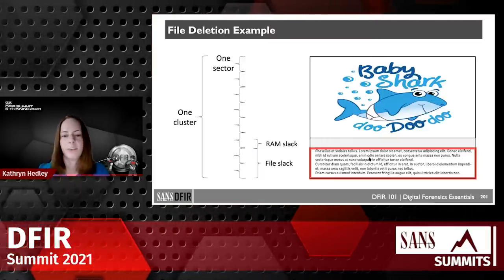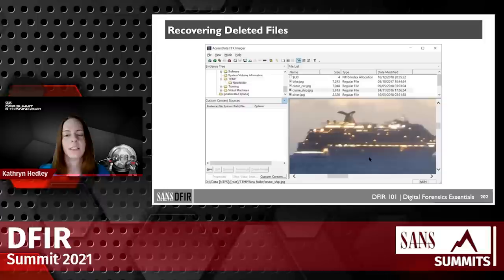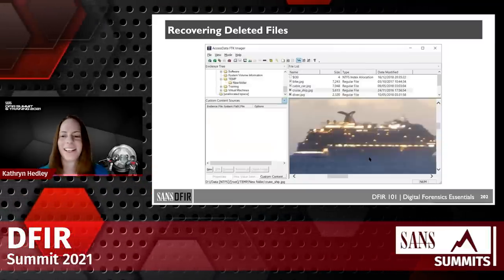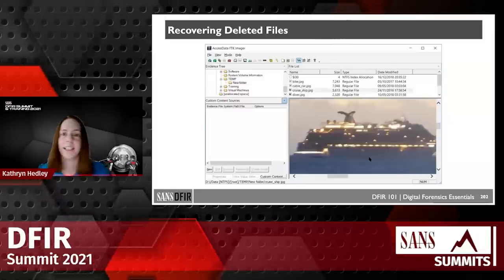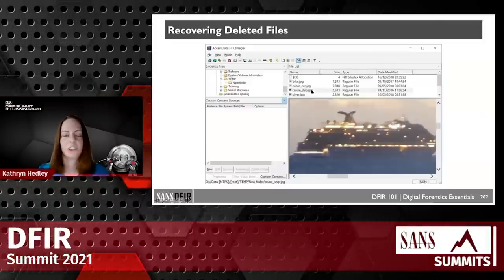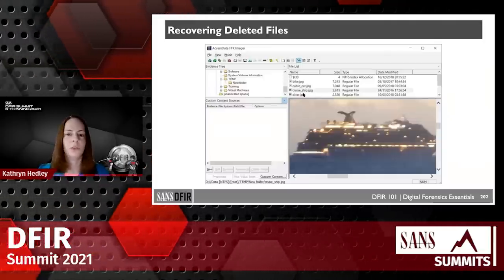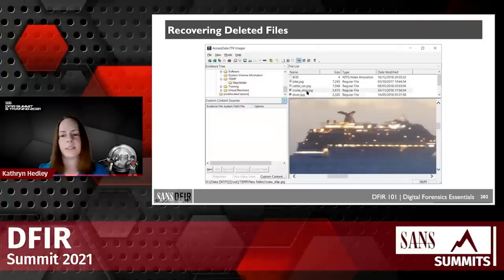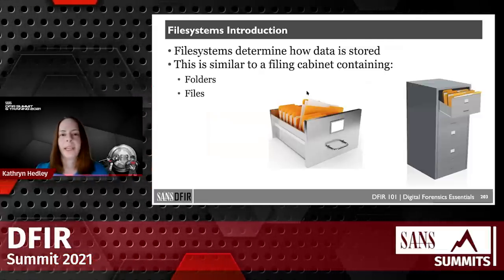Recovering deleted files is actually quite easy if they haven't been overwritten. The complete file still exists on the system along with all of its metadata — both the embedded file metadata and the file system metadata. For example, a file named 'cruise_ship.jpeg' retains that file name in file system metadata. Using a tool like FTK Imager, you can simply right-click and export the file to examine it. Intact deleted files are straightforward to recover.